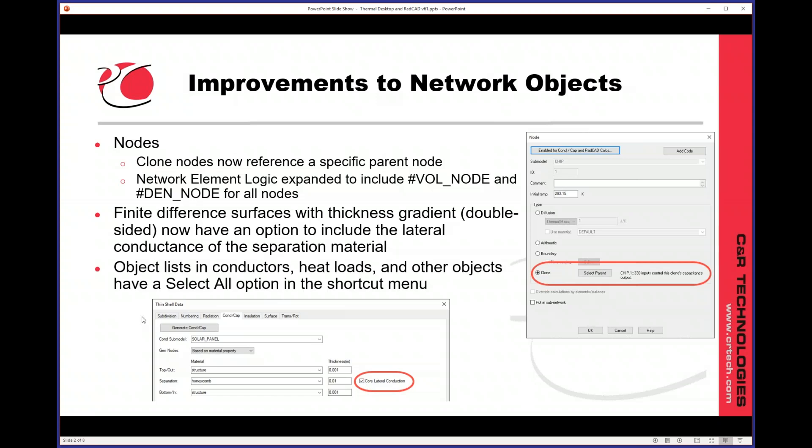Object lists that you find in conductors, heat loads, and other objects have a select all option in the shortcut menu. Simply right-click in that list, and you'll see the select all option.